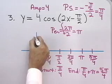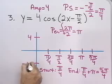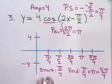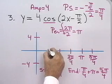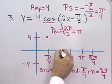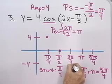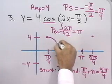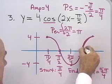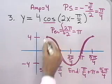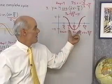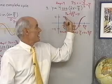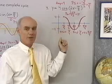The amplitude is 4, so I'll mark 4 and negative 4 on the y-axis. I have a cosine curve that's not reflected, so it starts at the phase shift of pi over 4. A regular cosine curve starts at 1, goes down to 0, down to negative 1, back up to 0, and then up to 1. My curve looks like a nice cosine curve — one complete cycle takes pi units on the x-axis, with an amplitude of 4 and a phase shift of pi over 4.